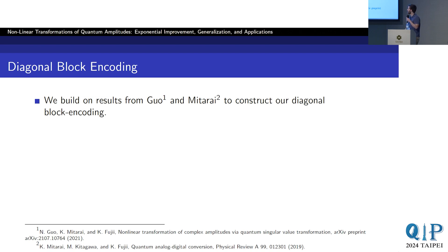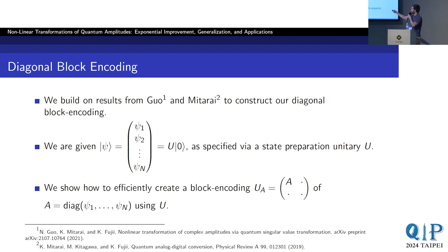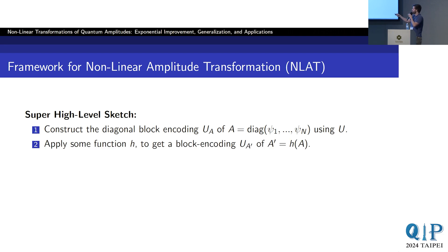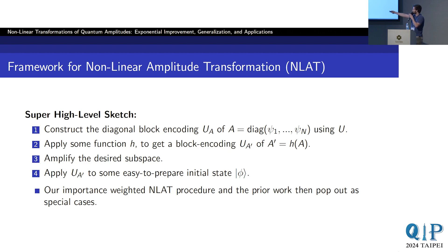Our results: first, we build on results from Naishu Guo and Mitare to construct a diagonal block encoding given your quantum state preparation unitary. Given this quantum state, you can construct an operator that is diagonal, where the elements correspond directly to those vector elements. At a super high level, the framework works as follows: first, construct the diagonal block encoding; then apply some function h via QSVT to get the transformed block encoding; then amplify the desired subspace; apply the block encoding to an easy-to-prepare initial state; and our importance-weighted nonlinear amplitude transformation procedure — one of our main contributions — pops out as a special case, and so does the prior work.